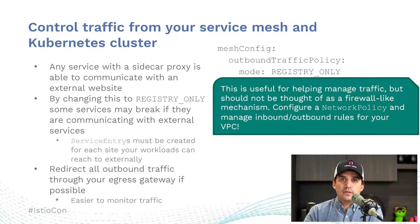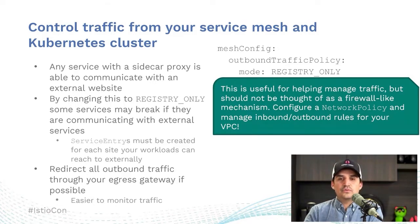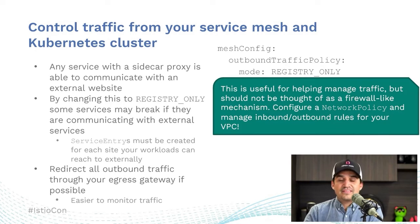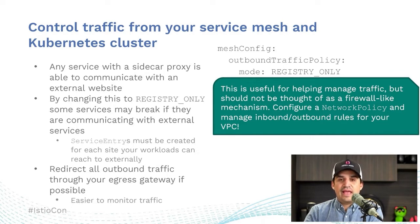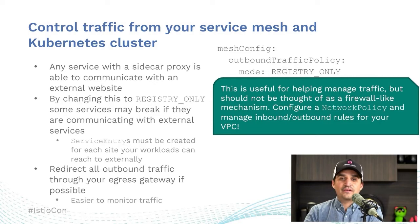Another setting I recommend is to change the default outbound traffic policy mode from 'allow any' to 'registry only.' This will help you monitor external traffic from workloads within your service mesh to external services such as S3 or Dropbox. This can be a breaking change — traffic will fail from those workloads until a service entry is created to allow that traffic. I do want to stress this is not a security setting; it is to help you understand how your service mesh is interacting, and it is not meant to act as a firewall.